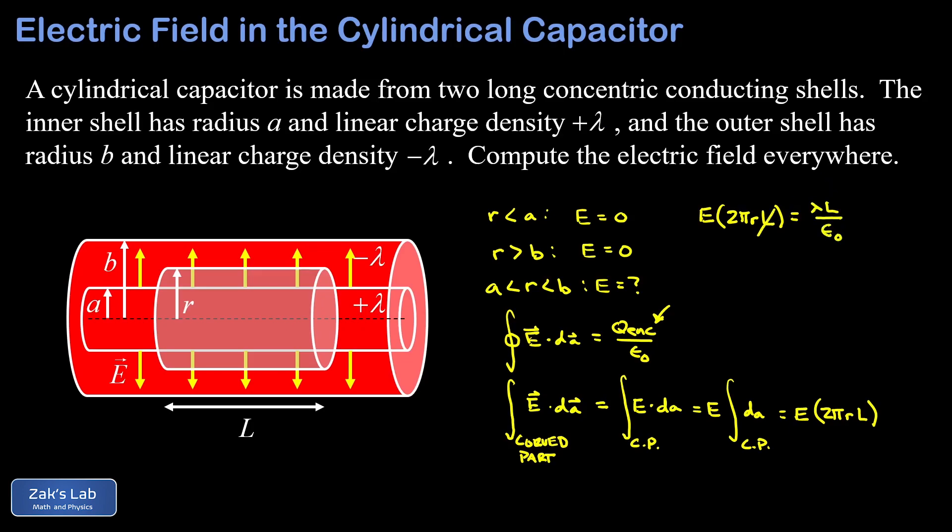Now our L's are going to cancel out, so the length of our Gaussian surface doesn't matter. We divide by 2πr. So for this region between the two shells of the cylindrical capacitor, we end up with an electric field of lambda over 2π epsilon zero r.